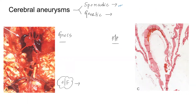There are some cases which are genetic — that means they are associated with genetic syndromes. Those syndromes include autosomal dominant polycystic kidney disease, neurofibromatosis type 1, Ehlers-Danlos syndrome type 4, and Marfan syndrome. These are genetic syndromes where there is an increased risk of cerebral aneurysm formation.